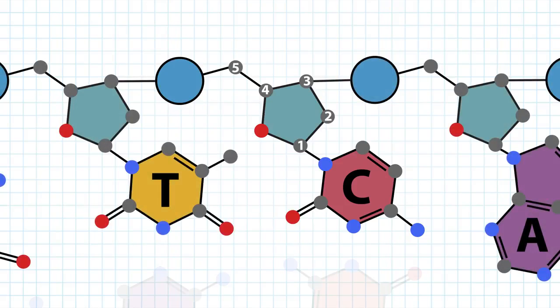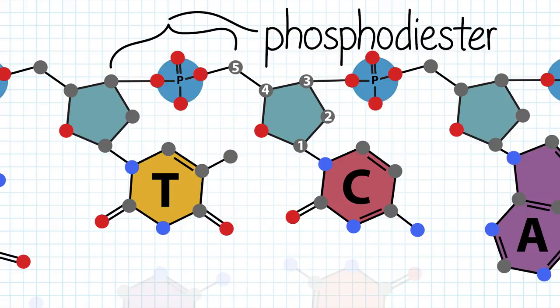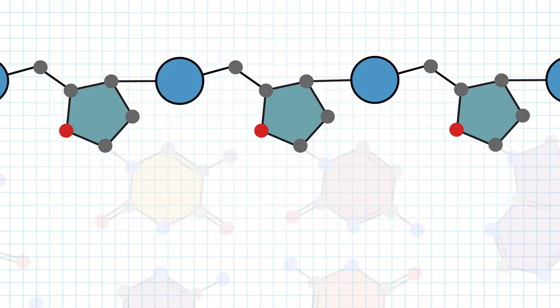Nucleotides attach to each other in the DNA strand by phosphodiester bonds. The phosphate group of one nucleotide binds to the three prime oxygen of the neighboring nucleotide. Thus, we can see that the sugars and phosphate groups make up the DNA backbone.